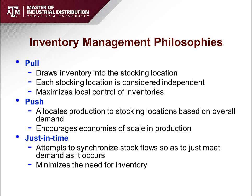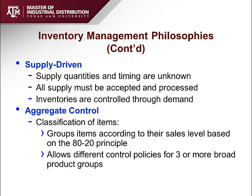Just-in-time (JIT) management aims to minimize inventory or the need for inventory, and it is based on the Toyota Production System. Supply-driven inventory management applies when supply quantities or timings are not known and shortages occur — in that case, you simply process all the products you can get.